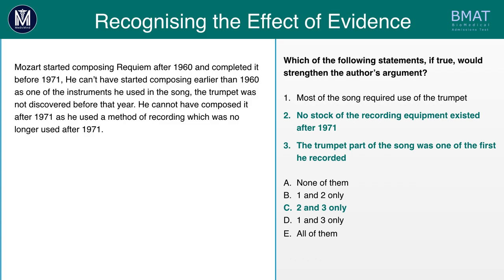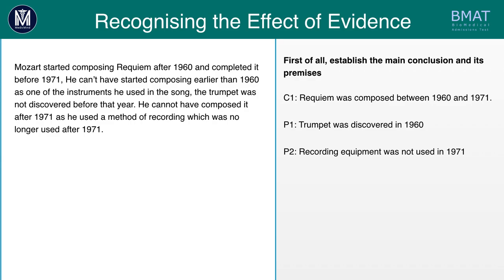As always, establish the main conclusion and its premises. The main conclusion here is that Requiem was composed between 1960 and 1971. One premise is that Trumpet was discovered in 1960, and another premise is that the recording equipment was not used in 1971.